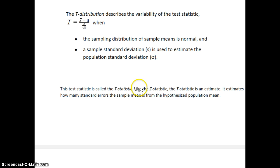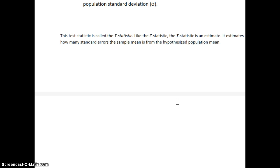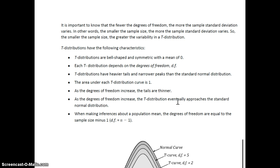So, like the z-score, the t-score is an estimate. It estimates how many standard errors the sample mean is from the population mean.